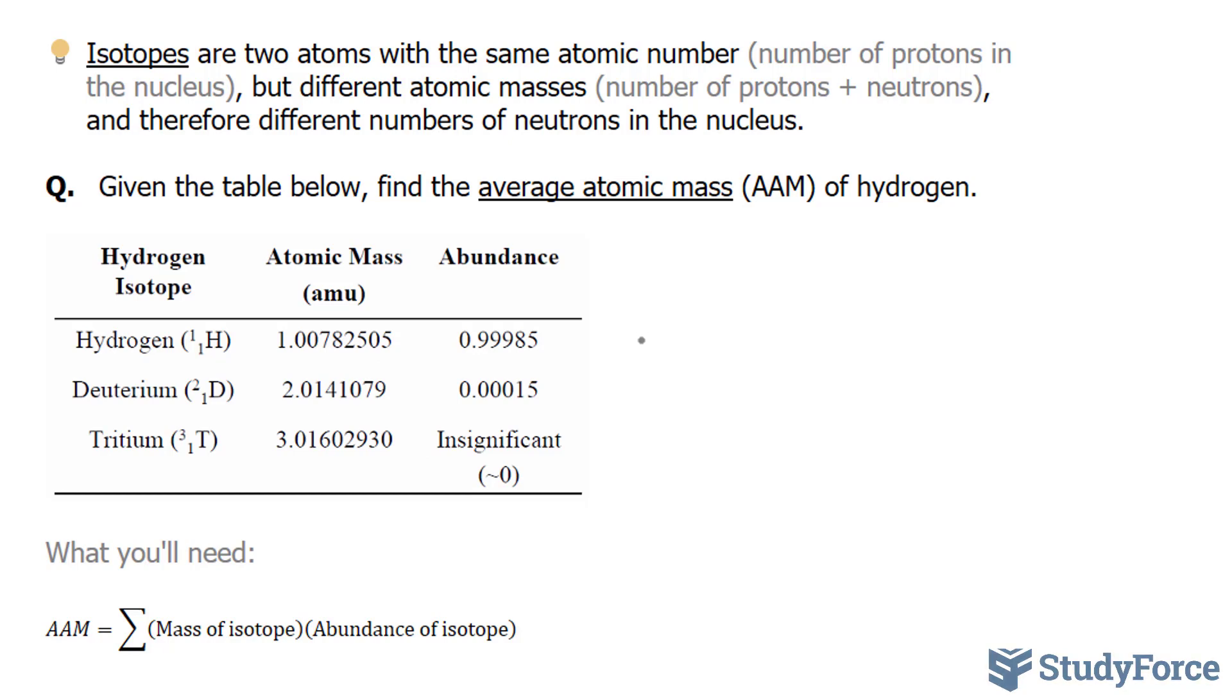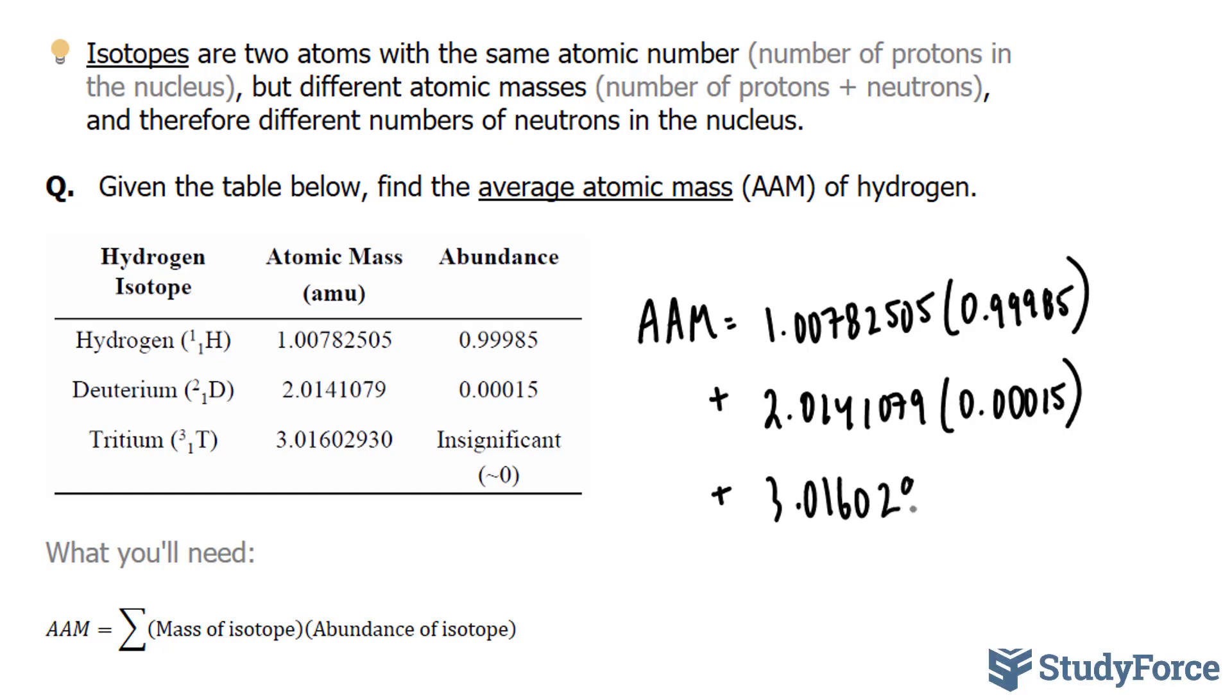So let's go ahead and do that. AAM is equal to 1.00782505 times 0.99985, multiplying this number 2.0141079 times 0.00015. And finally, 3.01602930 times 0.0. And this goes to nothing.